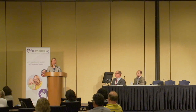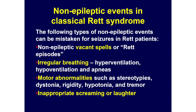The other really important factor in classical Rett syndrome is differentiating seizures from non-epileptic events, which is particularly difficult in Rett syndrome because of the other types of events that can be confused for seizures. Girls with Rett syndrome can have vacant spells or Rett episodes — stereotypies, tremors, different movements, changes in breathing — sorting out which of those are just part of the disorder versus a seizure can be a challenge. Motor abnormalities, repetitive movements, dystonia, rigidity, low tone, and episodes of screaming or laughing, common in Rett syndrome, can be mistaken for seizures.